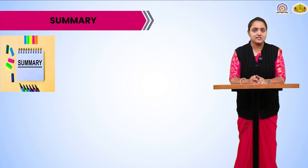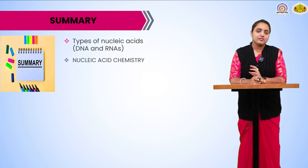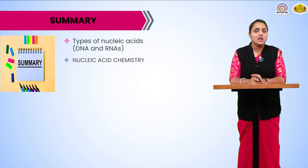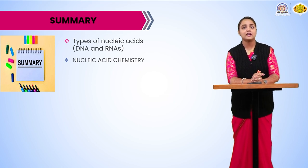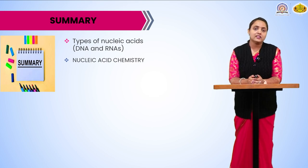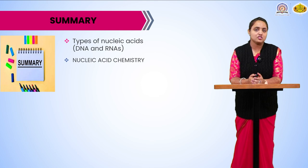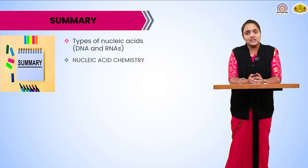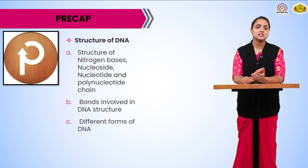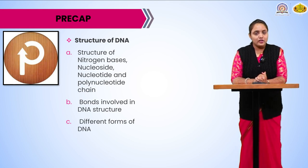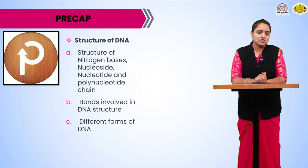Moving towards the summary of today's session: we have seen the general aspects of nucleic acid chemistry, the two types DNA and RNA, and the major differences between them. RNA is of three types while DNA is only of one type, though it has different forms — A form, B form, Z form, and D form — which we are going to see. We have seen the nucleic acid chemistry, how nucleic acid is made, and what are the components of nucleic acid. In our next session we are going to see the detailed structure of DNA, the nitrogen base, the polynucleotide chain, the various bonds involved in DNA structure, and the different forms of DNA.